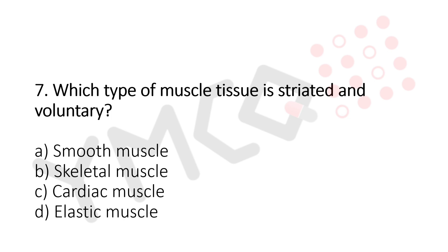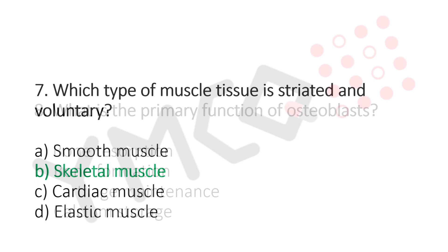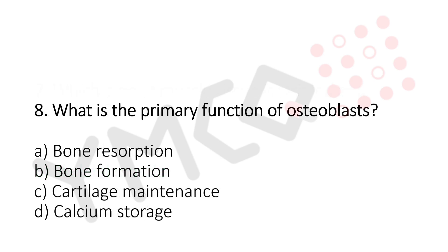Question 7: Which type of muscle tissue is striated and voluntary? Option A: smooth muscle. Option B: skeletal muscle. Option C: cardiac muscle. Option D: elastic muscle. The answer is Option B, skeletal muscle.